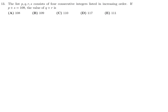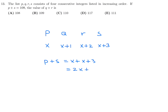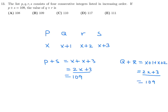The list P, Q, R, S consists of four consecutive integers in increasing order. If P plus S equals 109, the value of Q plus R is — let P equals X, so Q equals X+1, R equals X+2, S equals X+3. Then P plus S equals 2X plus 3 equals 109. Q plus R equals X+1 plus X+2, which is also 2X plus 3, so that's also 109. Number 13, the answer is B.